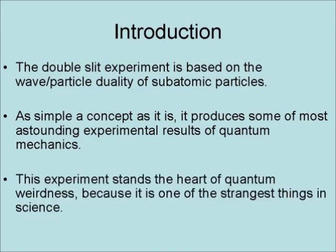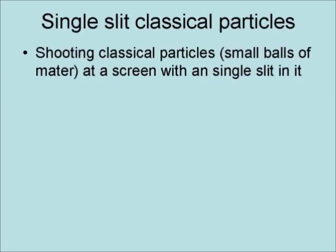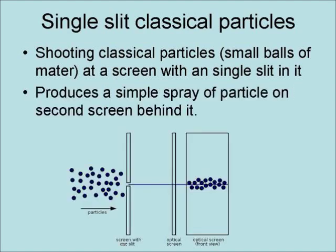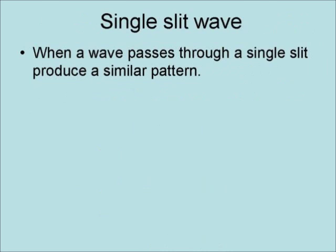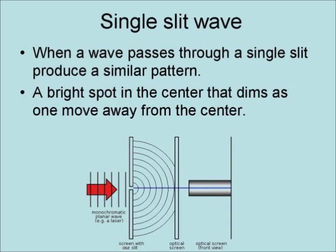This experiment stands at the heart of quantum weirdness because it is one of the strangest things in science. Shooting classical particles — that is, small balls of matter — at a screen with a single slit in it produces a simple spray of particles on the second screen behind it. When a wave passes through a single slit, it produces a similar pattern: a bright spot in the center that dims as one moves away from the center.